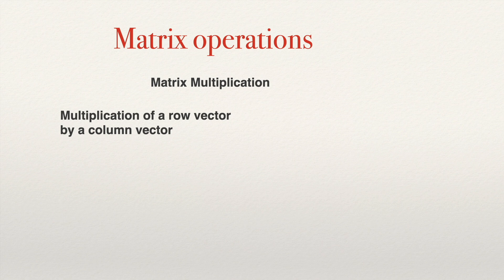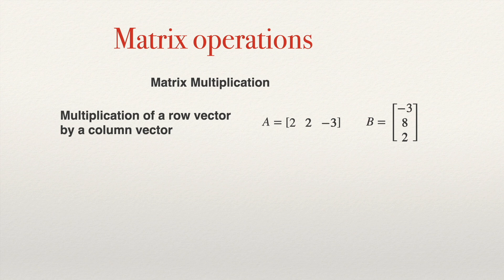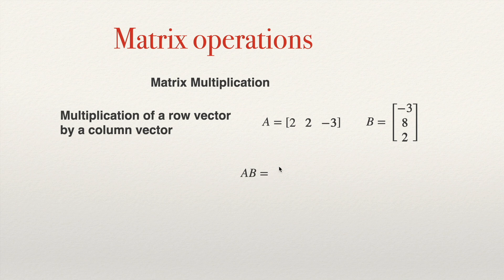First we have a row vector, and second we have a column vector. This is a matrix that has only one row, and we have another matrix that is only one column. If we have this case and both vectors have the same number of entries — for example, this vector has three entries and this vector has three entries — the product can be done.